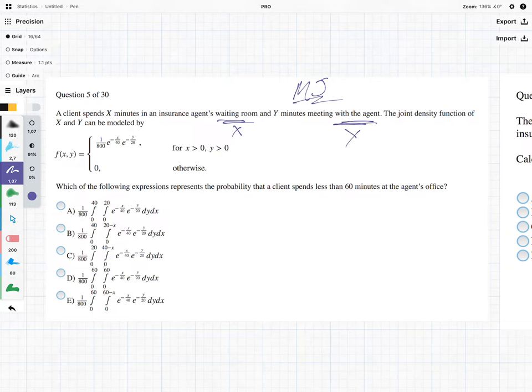The joint density function of X and Y can be modeled by, and what we basically have here is a joint exponential distribution. So you don't have to separate it, but you could think of separating it as follows, where we have for X, we've got this one over here, and then for Y, we have this over here.